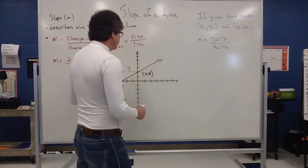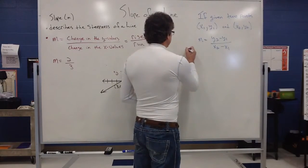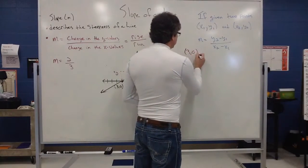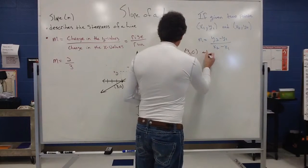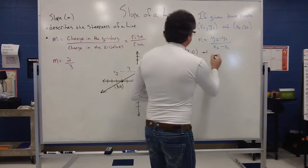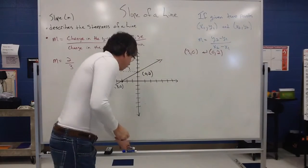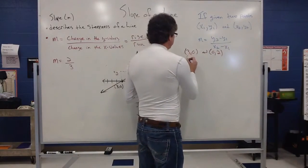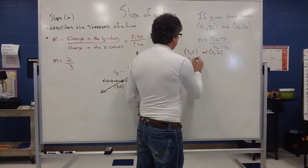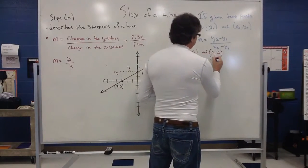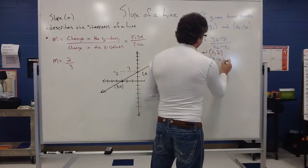So, if I identify three, zero as point one, so three, zero as point one, and zero, two is point two, what I can pick up on is, this is your x1, this is your y1, this is your x2, and this is your y2.